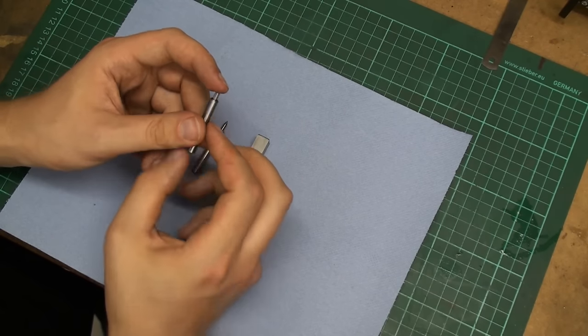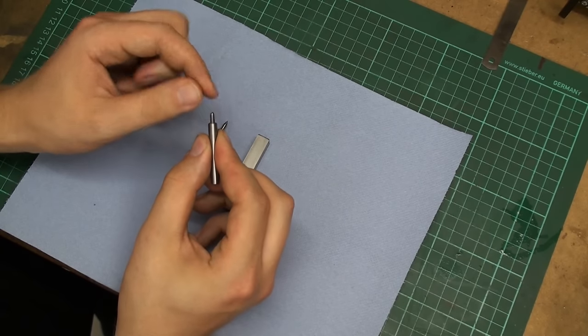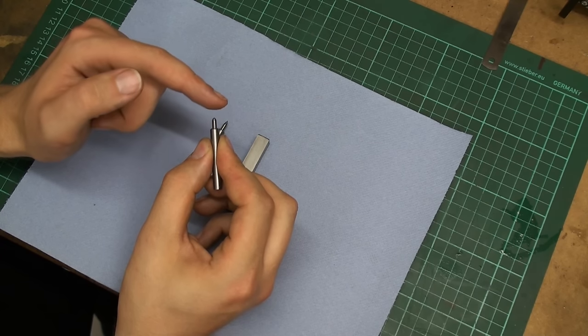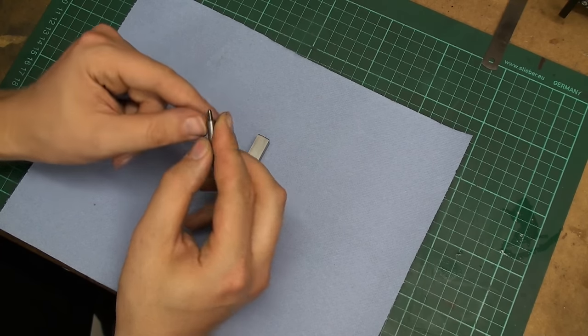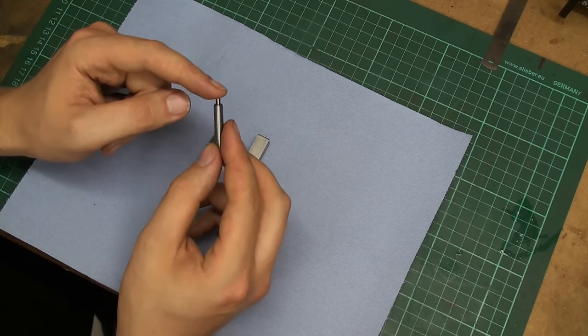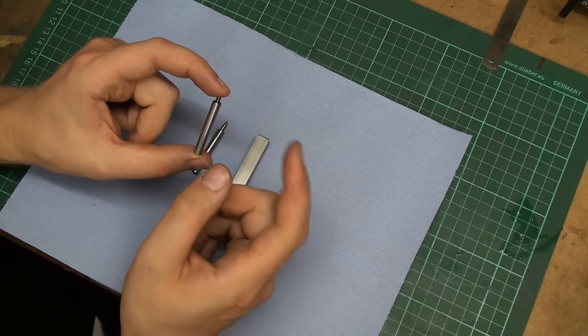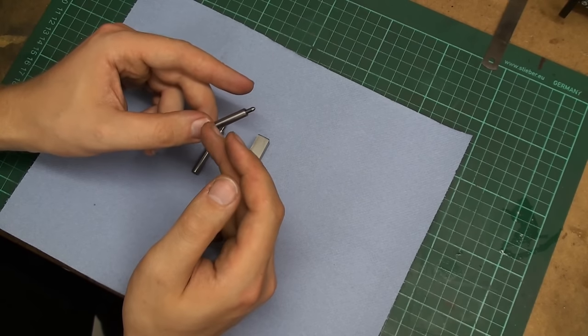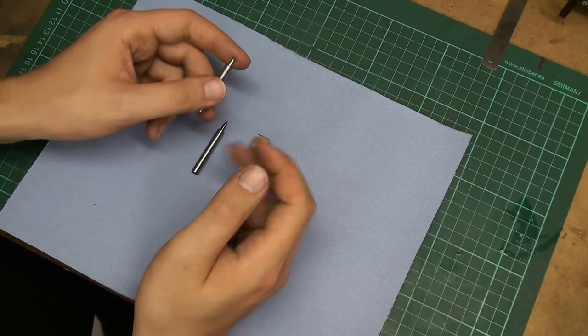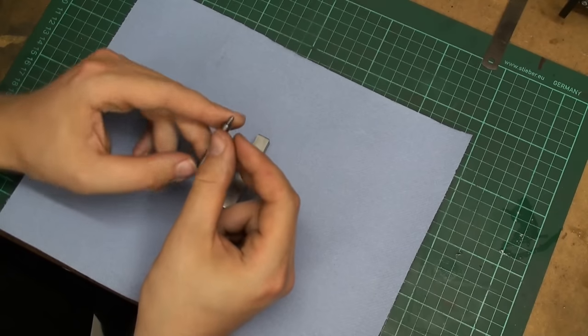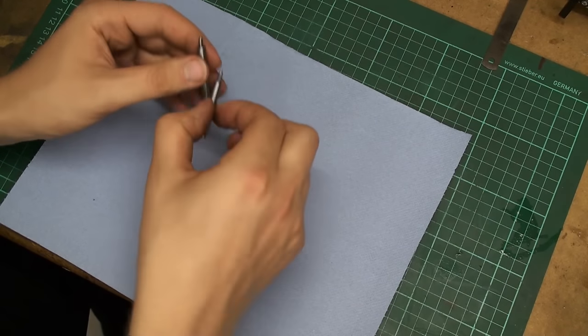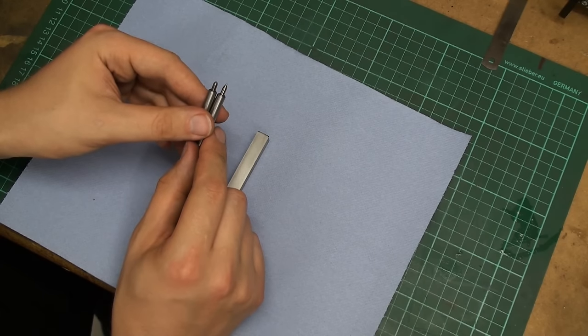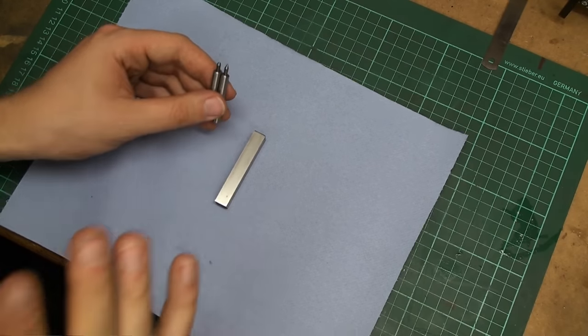And the problem is, they have about two hundredths of a millimeter side play. The carbide tip can wiggle side to side inside the housing. That's causing the problem. So these are fine for small sign engraving, numbers, letters and stuff like that, but not for high precision engraving. That's not going to work, so I will have to do it another way.